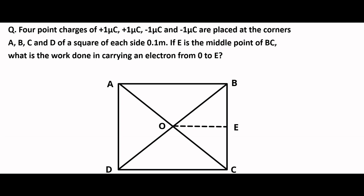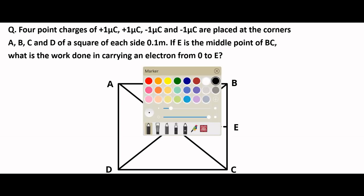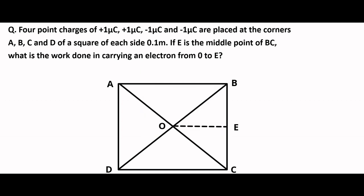This is the situation where we have plus 1 micro coulomb at A, then again at B plus 1 micro coulomb, at C we have minus 1 micro coulomb, and again at D we have minus 1 micro coulomb. These are the charges placed at A, B, C, and D.